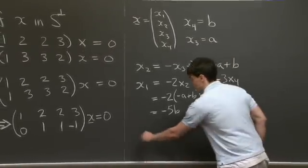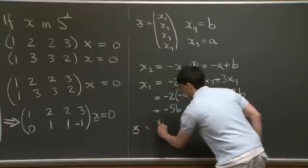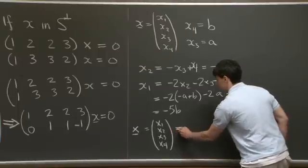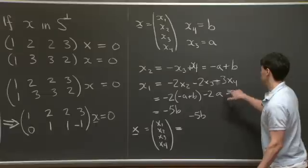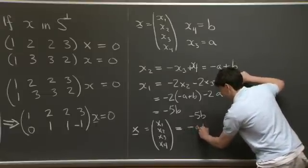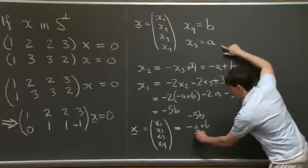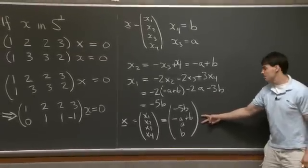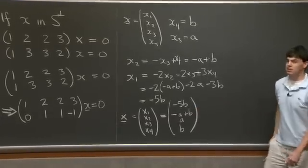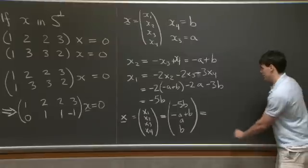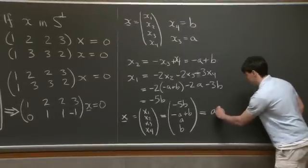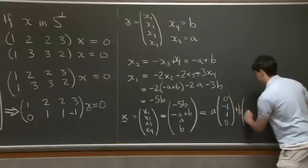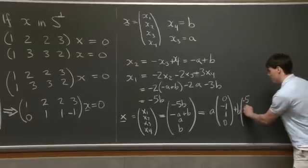Okay, so we can combine everything together, and we end up obtaining x equals: x1 is minus 5b, x2 is minus a plus b, x3 is a, and x4 is b. And now what we can do is we can take this vector and we can decompose it into pieces which are a multiplied by a vector and b multiplied by a vector. So you'll note that this is actually a times (0, -1, 1, 0) plus b times (-5, 1, 0, 1).